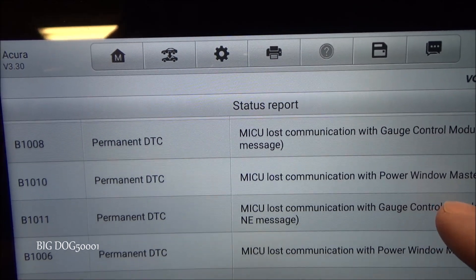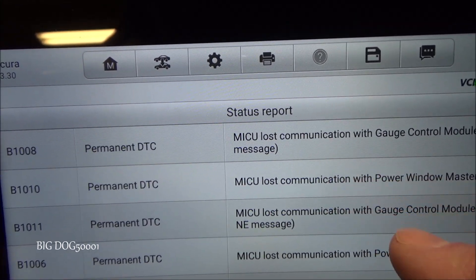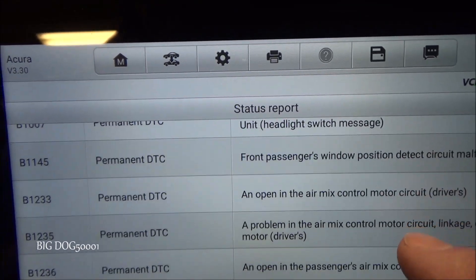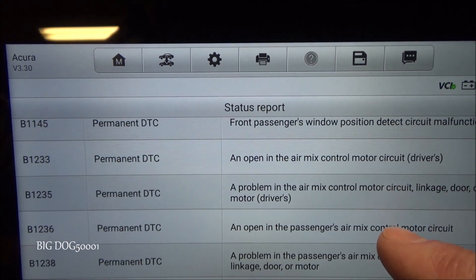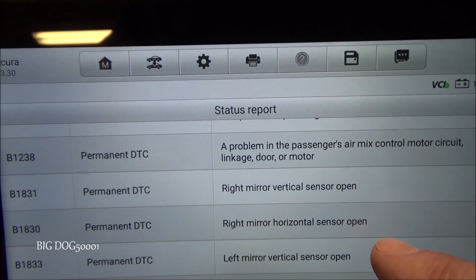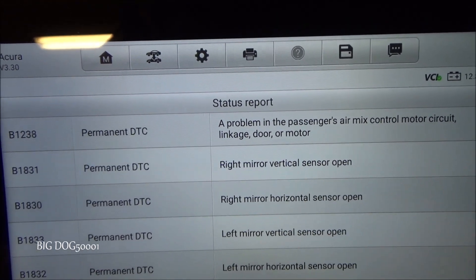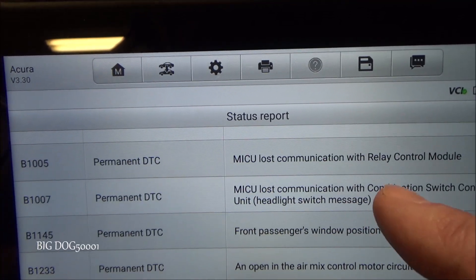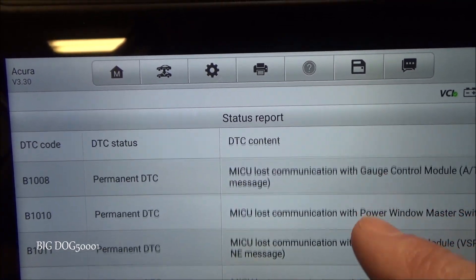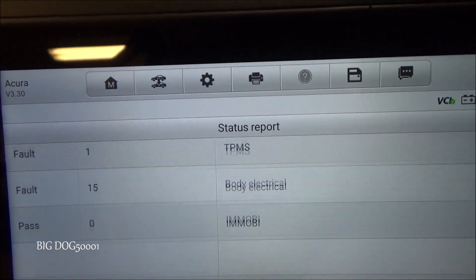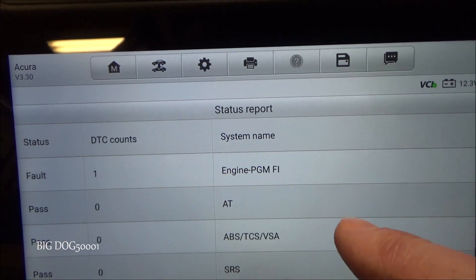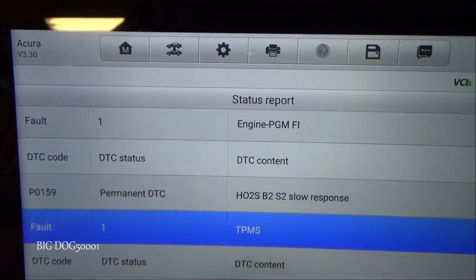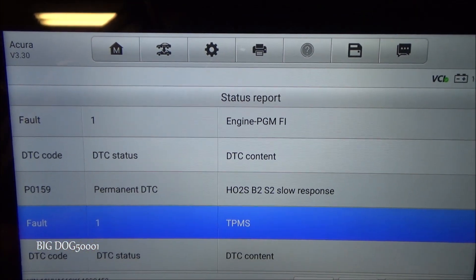Looks like problems with the MICU and the gauge control module. That looks like either somebody unplugged something or could be an issue. I see a lot of stuff. Something went bad. Or a bad battery can also cause a lot of that stuff. But we are only concerned with our P0159. So those codes are not going to help us other than that one. But we already knew that one.